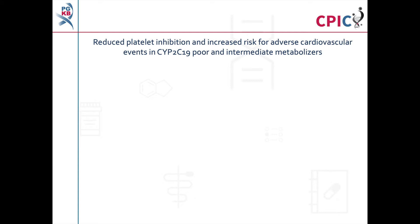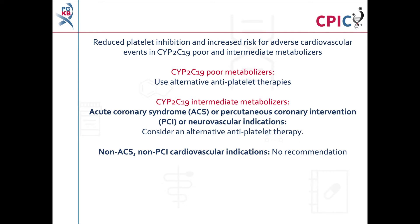Patients who are CYP2C19 poor or intermediate metabolizers have reduced platelet inhibition when treated with clopidogrel, putting them at an increased risk of adverse cardiovascular events. The guideline recommends that CYP2C19 poor metabolizers use alternative antiplatelet therapies, and that an alternative antiplatelet therapy be considered for CYP2C19 intermediate metabolizers taking clopidogrel for acute coronary syndrome (ACS), percutaneous coronary intervention (PCI), or neurovascular indications.